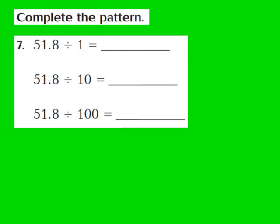Now let's take a look at question number seven. Our job is to complete the pattern — we're dividing by 1, 10, and 100. I'm going to base my pattern on the number of zeros in the divisor. For the first part, we have 51 and 8 tenths divided by 1. There's no zero behind the 1, so my decimal point does not have to move. My quotient is 51 and 8 tenths, because 51 and 8 tenths divided by 1 is still 51 and 8 tenths.